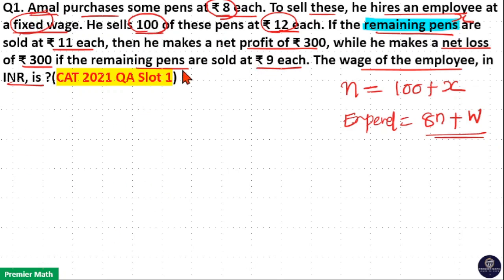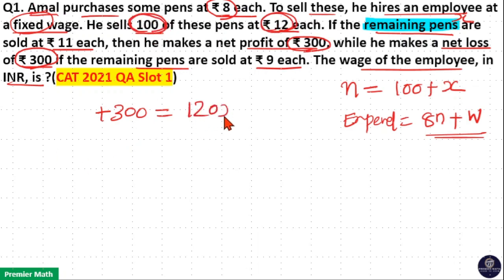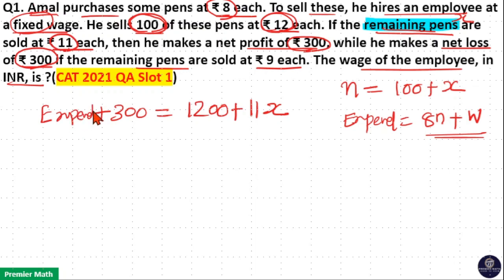There are two selling prices here. At one selling price, he gets a profit of Rs. 300, and at another selling price, he gets a loss of Rs. 300. Profit of 300 means plus 300. When he sells 100 pens at Rs. 12 each, that is Rs. 1200, plus the remaining pens X at Rs. 11 each — so selling price is 1200 plus 11X. Profit of 300 means selling price is Rs. 300 greater than the expenditure, where expenditure is 8N plus W.